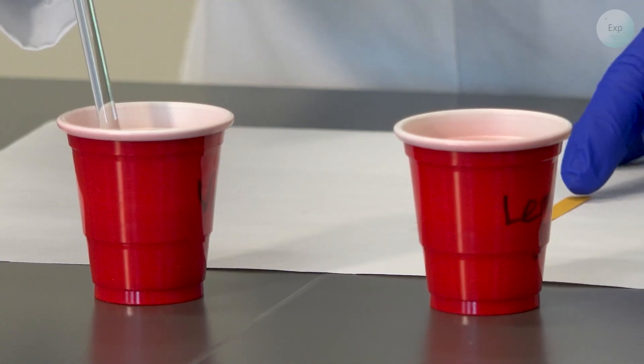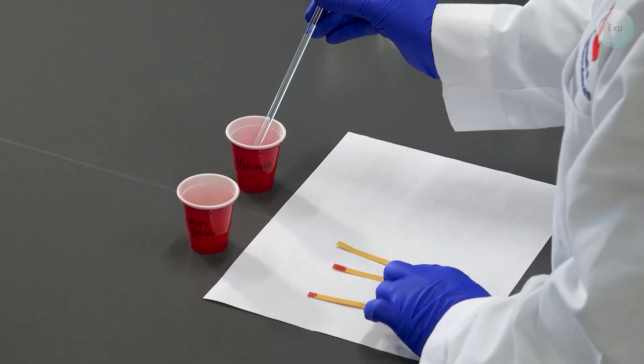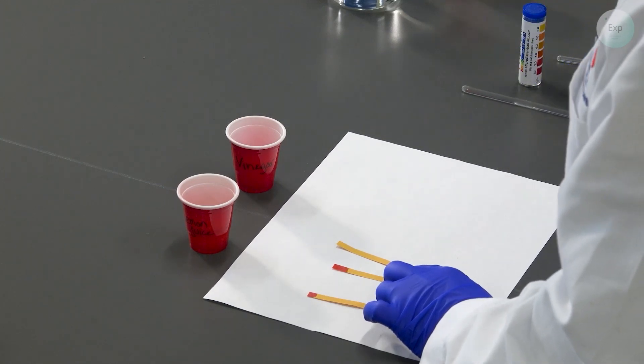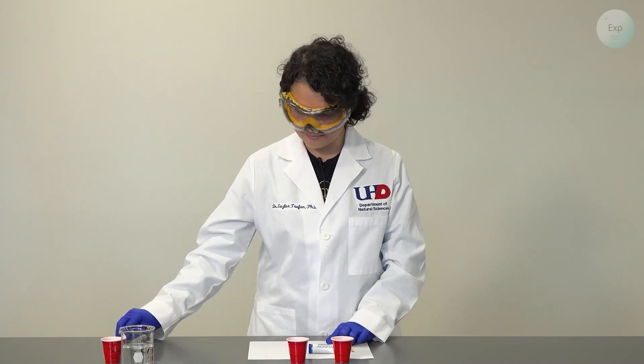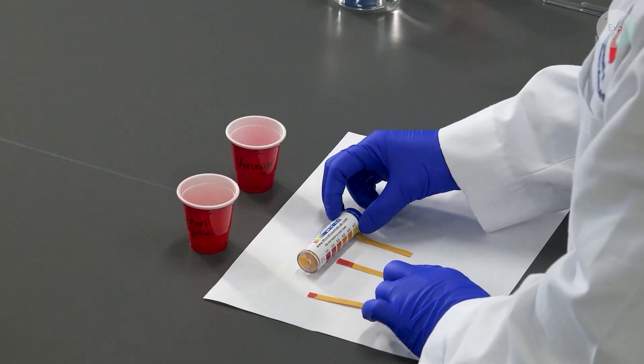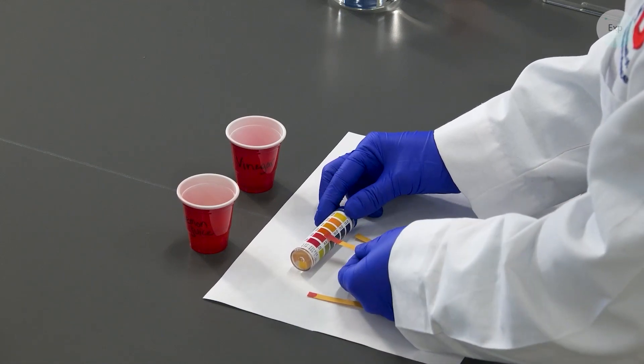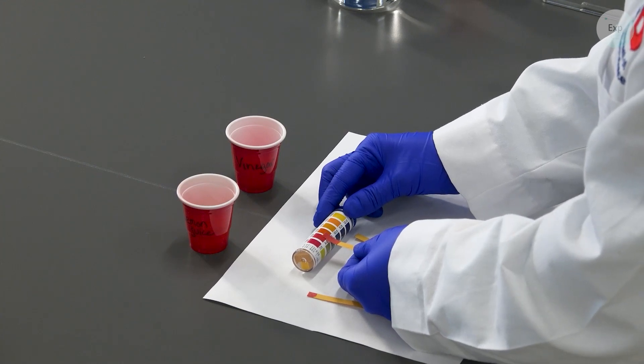So I will dip my stirring rod into the vinegar, place it on the pH paper, and it gives me a color response. I will compare that color response to the scale that is indicated on the pH chart and it appears to be closer to three but somewhere between a pH of two and three.